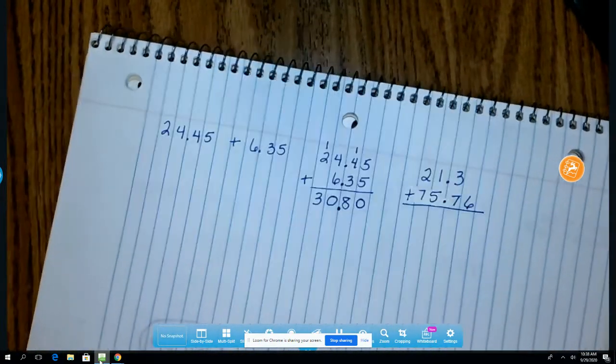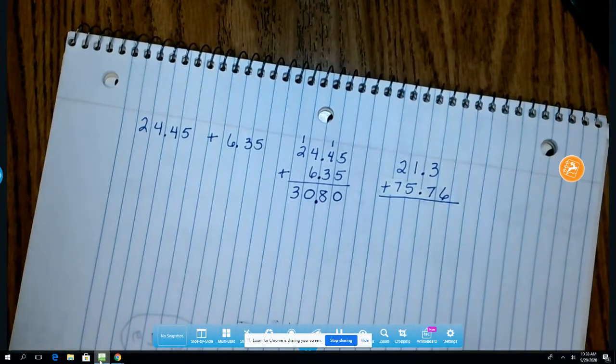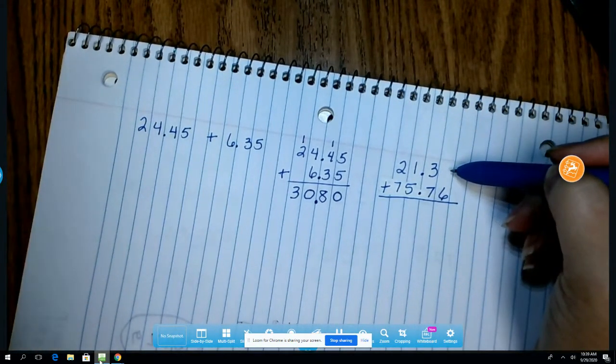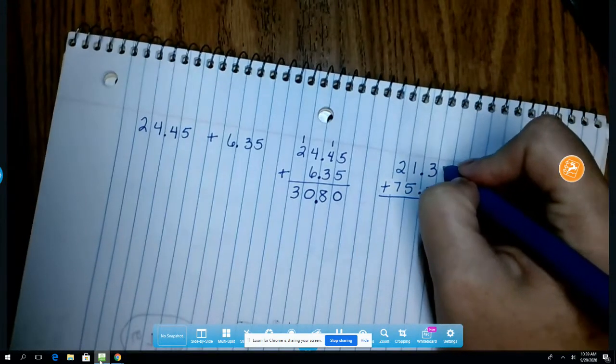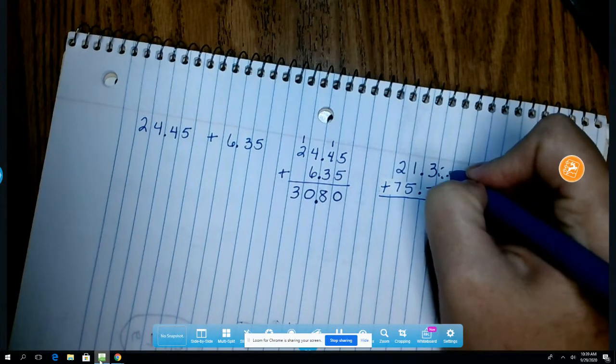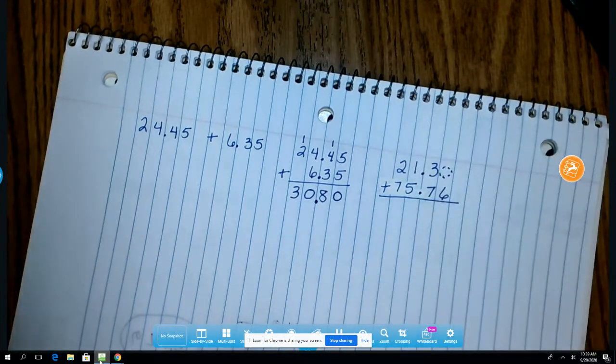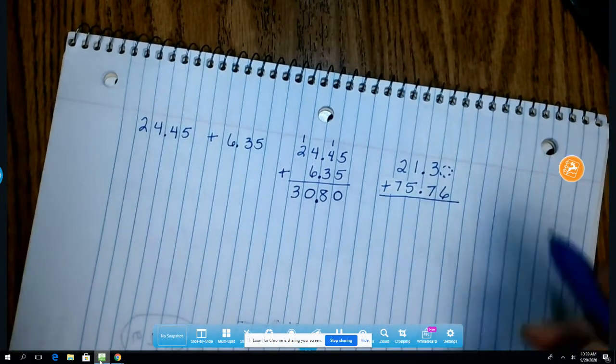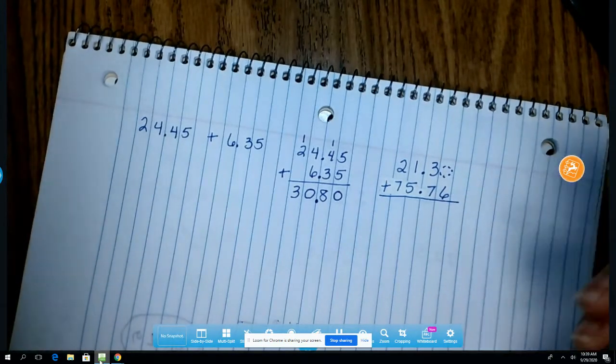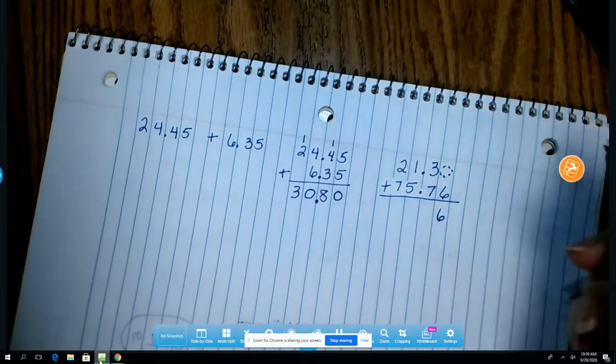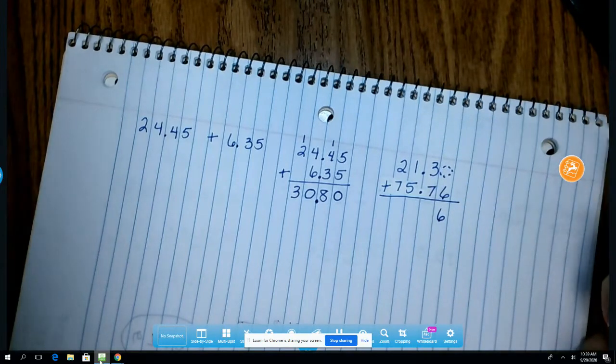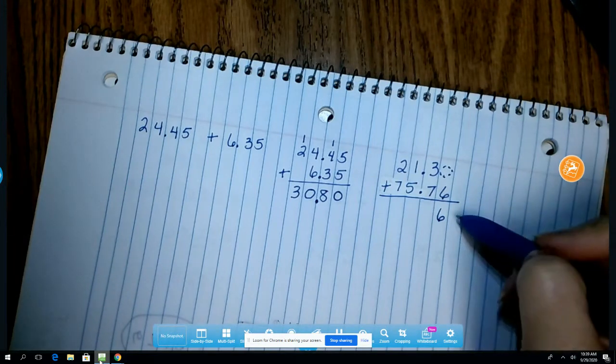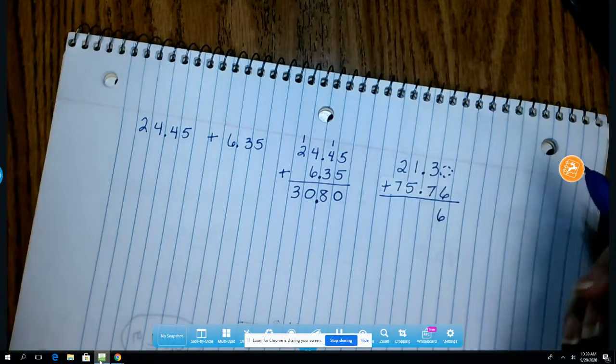Just like if I were adding without decimals. If I don't have something in this place right here there's an invisible zero. If it helps you to write in that invisible zero, do that. Okay, zero plus six is 6. 3 plus 7 is 10. Just like with the others, if I have too much for that place value, part of it has to carry over to the next place.